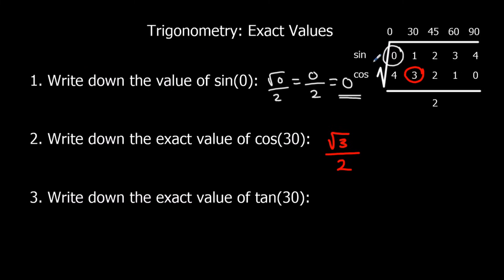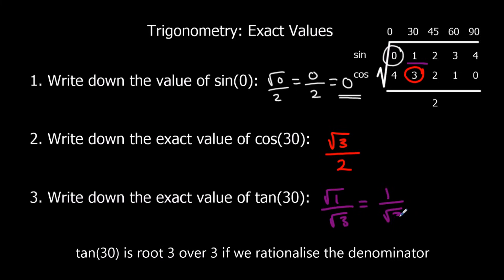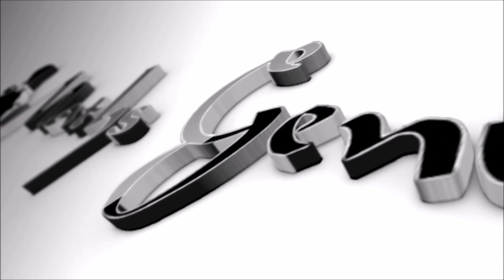And tan 30, 30 is here. Root 1 over root 3, which is 1 over root 3.